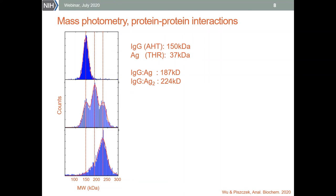We don't have a distribution for thrombin alone since the molecular mass of thrombin is about 37 kilodalton, which is below the detection limit of our instrument at about 45-50 kilodalton. We wanted to see the complexes, so we prepared two antigen-antibody mixtures. Since we expected 2-to-1 binding, we prepared samples with about 2 times molar excess and about 5 times molar excess of the antigen. The small molecular weight of the antigen is actually working to our advantage here.